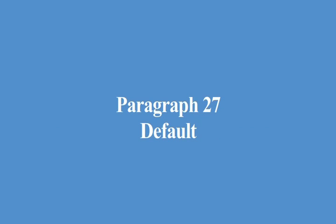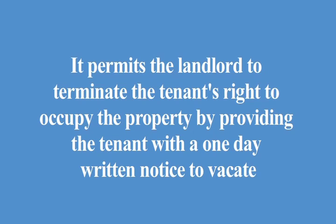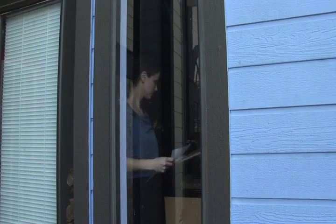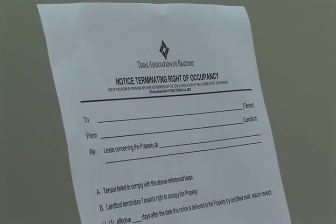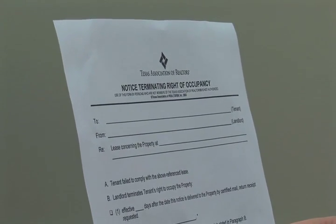Paragraph 27, Default. This paragraph explains that a party may seek relief provided by law if the other party fails to comply with the lease. Under this paragraph, the tenant will find the remedies the landlord may pursue if the tenant fails to pay rent on time or fails to comply with the provisions in the lease. Most importantly, this paragraph permits the landlord to terminate the tenant's right to occupy the property by providing the tenant with a one-day written notice to vacate if the tenant violates the lease. Pay careful attention to this paragraph, as a three-day notice to vacate is not required.